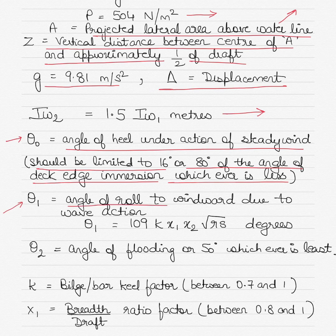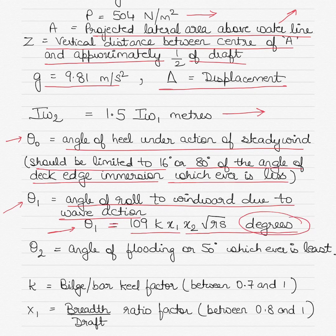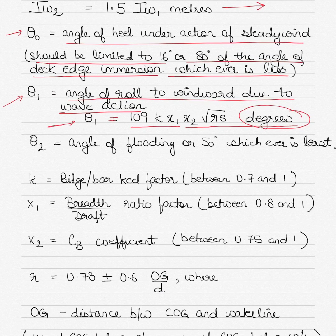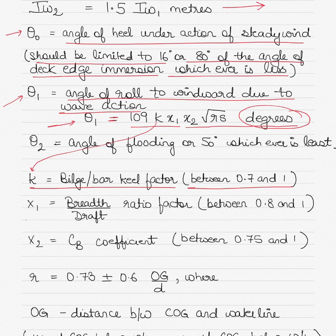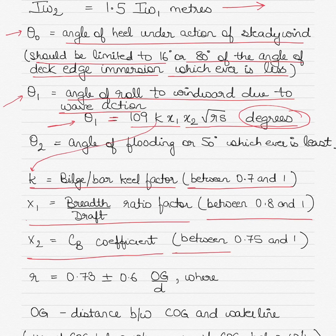Theta 1 is the angle of roll to windward due to wave action. If the vessel rolls over to the windward side due to wave action, theta 1 is calculated by multiplying 109 by constant k, x1, x2, under root r times s, and it is referred to as degrees. K stands for bilge or bar keel factor between 0.7 and 1. X1 stands for the breadth to draft ratio factor, normally between 0.8 and 1. X2 stands for the block coefficient of the vessel, normally between 0.75 and 1.